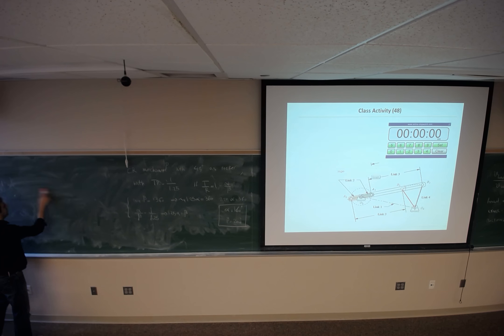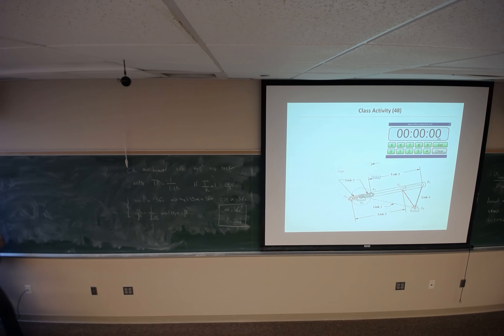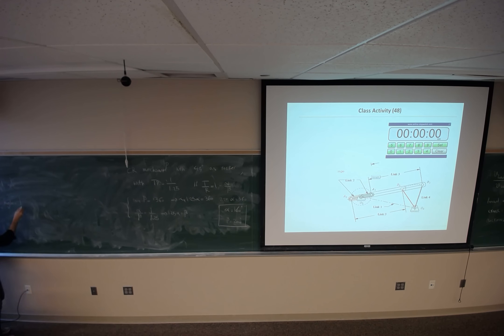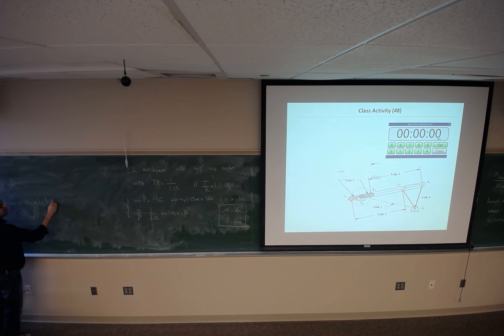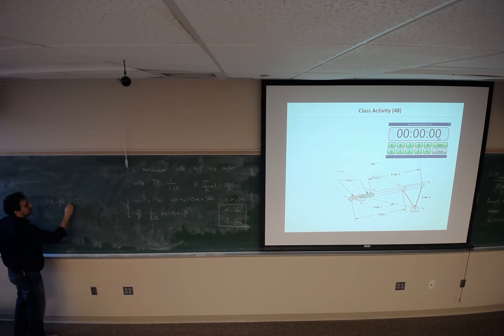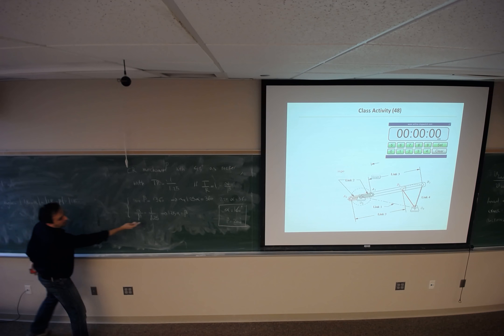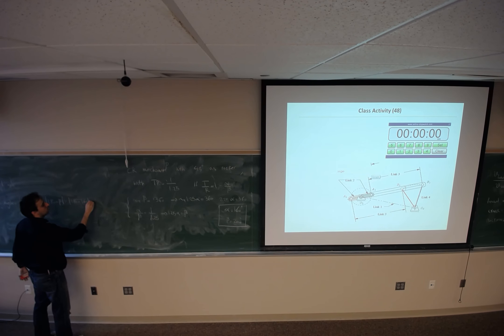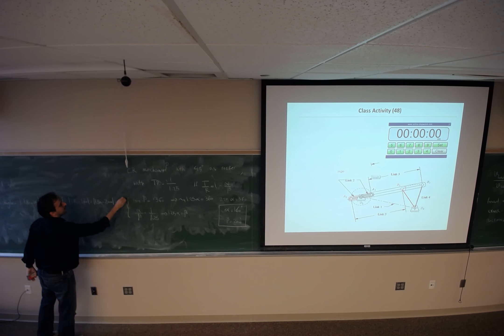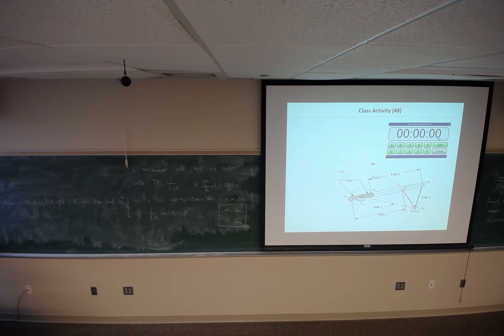How can I design this mechanism? We define something called the deviation angle. The deviation angle is defined as the absolute value of 180 minus alpha, or equivalently 180 minus beta — you get the same answer. So 180 − 160 = 20 degrees, or |180 − 200| = 20 degrees. The deviation angle is 20 degrees.